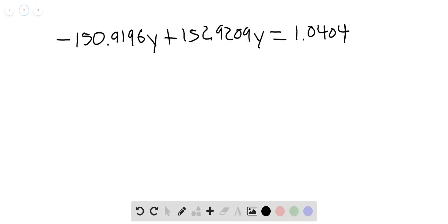If I combine those two terms, we can see we've got the negative there. So negative 150.9196 plus 152.9209, we plug that into our calculator, we get 2.0013y equals 1.0404.